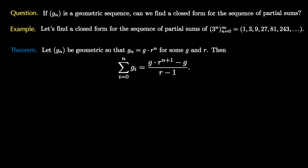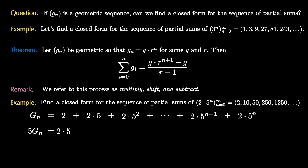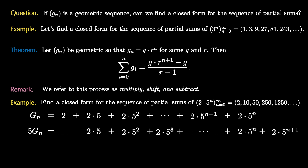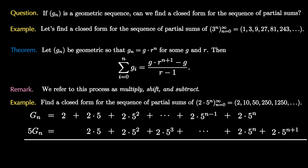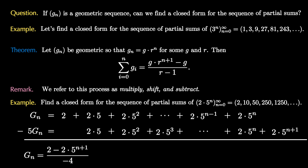This theorem is often referred to as multiply, shift, and subtract, because that's what we do when we compute the sums numerically. Let's try another example: the closed form for the sequence of partial sums of 2 times 5 to the n. We're looking for the sum g_n, which is 2 plus 2 times 5 all the way up to 2 times 5 to the n. The ratio is 5, so we multiply the sum by 5 term by term, seeing almost the exact same summation again. If we shift to the right, the terms line up. Subtracting the two sums term by term, we have negative 4 times g_n equals 2, with all middle terms canceling out until the very last term, where we subtract 2 times 5 to the n plus 1. After algebra, g_n equals (2 times 5^{n+1} minus 2) all over 4, as guaranteed by the theorem.